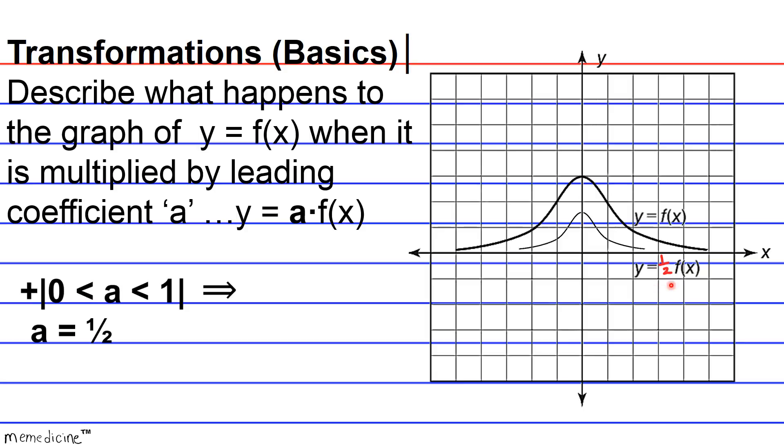Okay, but our leading coefficient is not always going to be positive. There are instances where the magnitude is between 0 and 1, therefore a fraction yielding a vertical contraction. But when you negate it, it's still a vertical contraction, but there will be flipping about, or rotation about, the X axis.